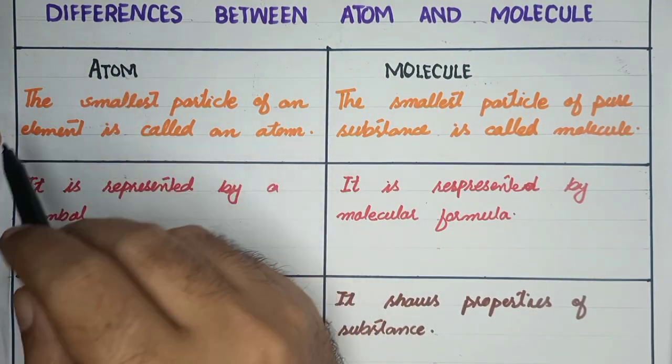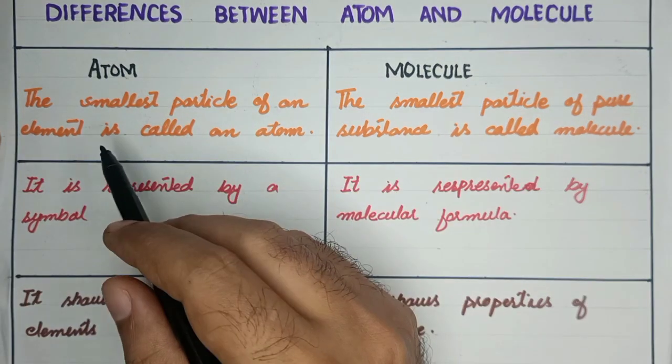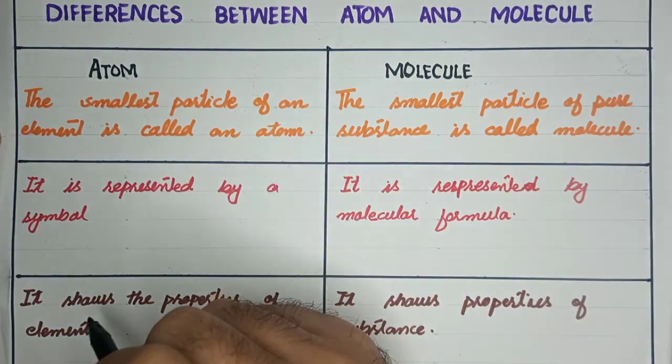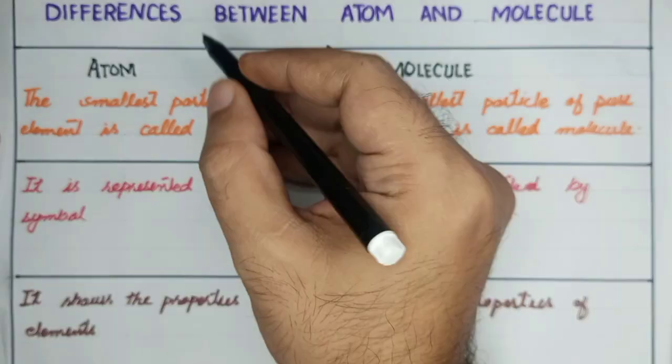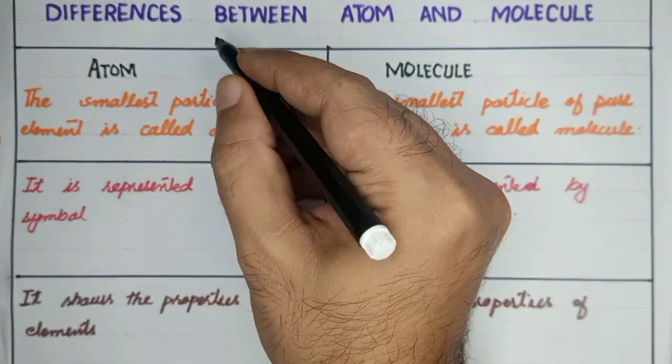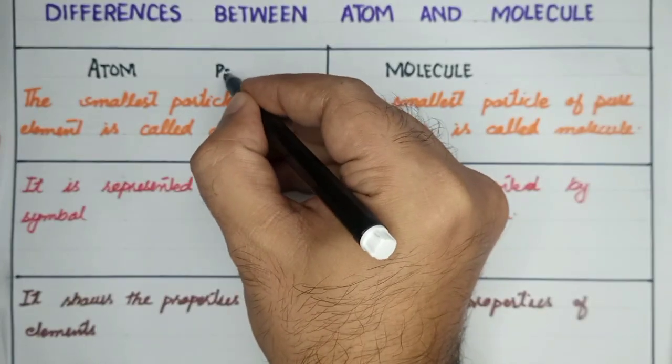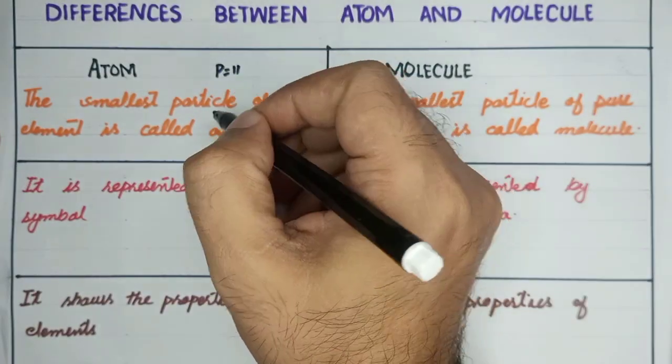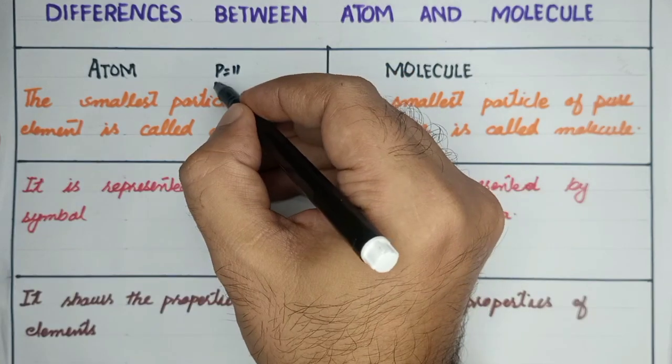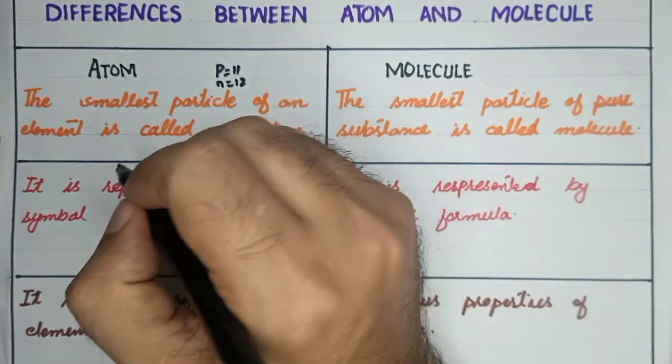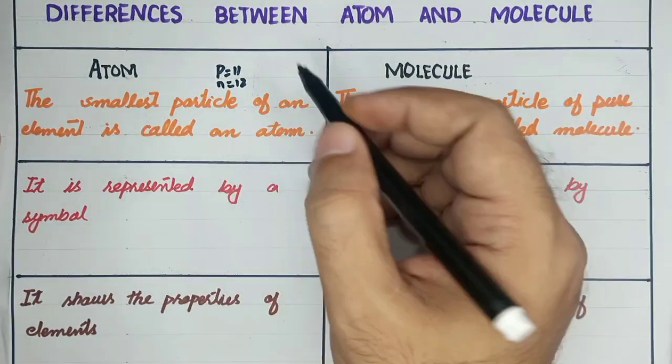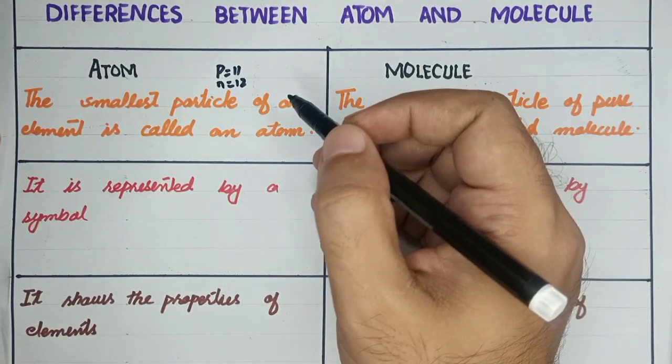First of all, the smallest particle of an element is called an atom. It is a sodium atom. How do you identify the sodium atom? You will identify that the proton in its nucleus is 11. If the atomic number is 11, then it is the sodium atom. If you want to find the hydrogen atom, then you will identify the element.